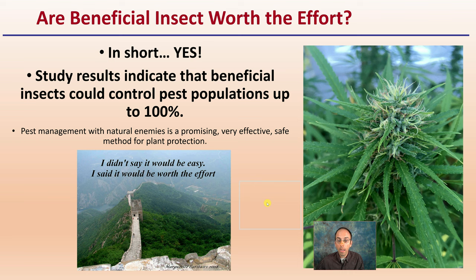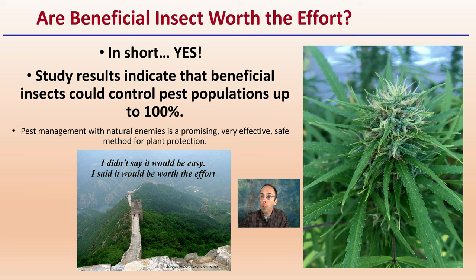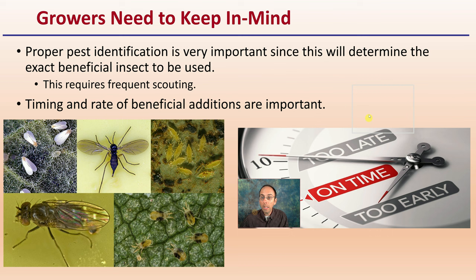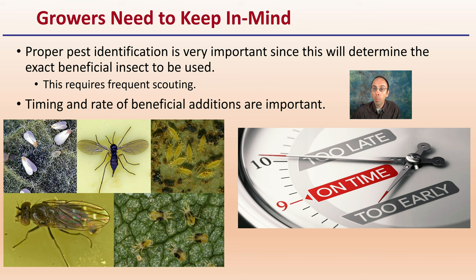Are beneficial insects worth the effort? In short, yes. The study indicates that beneficial insects could control pest populations up to 100%. Pest management with natural enemies is very promising, very effective, and a safe method for plant protection as well as applicator protection. Growers need to keep in mind that proper pest identification is important since this determines the exact beneficial insect to utilize, which requires frequent scouting. Timing and rates of beneficial additions are important — keeping the right species, the timing, and matching the species with your pest and the degree of severity is all important to achieve an effective, environmentally sustainable control method.